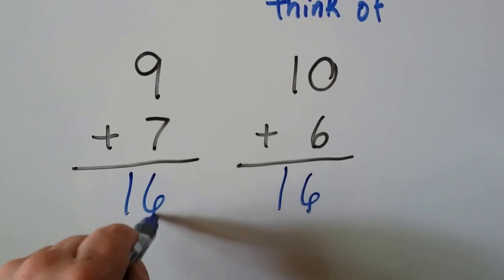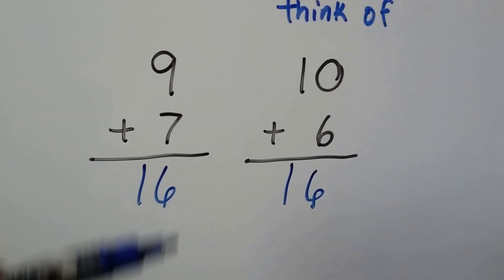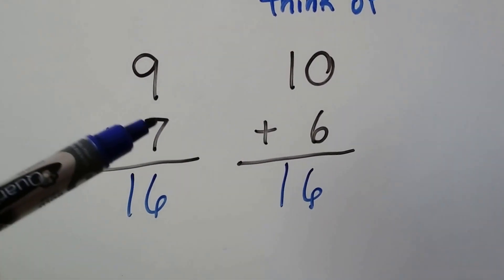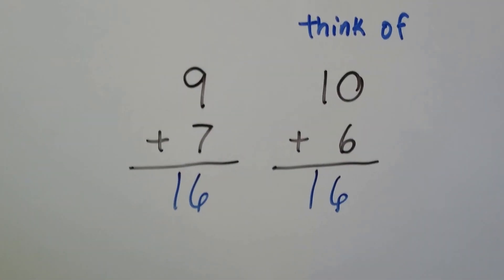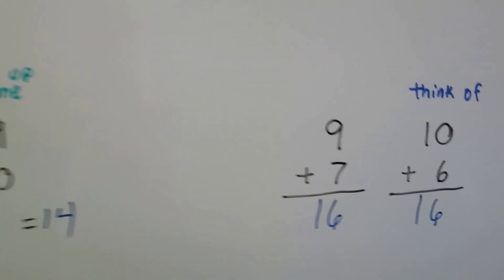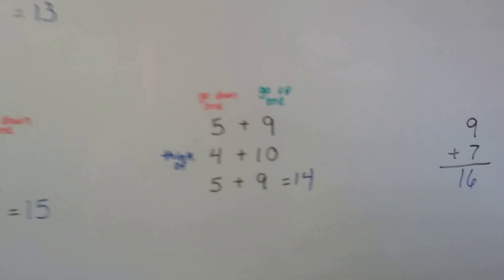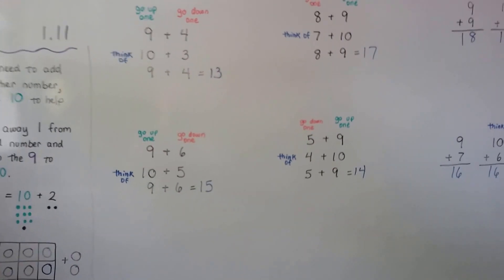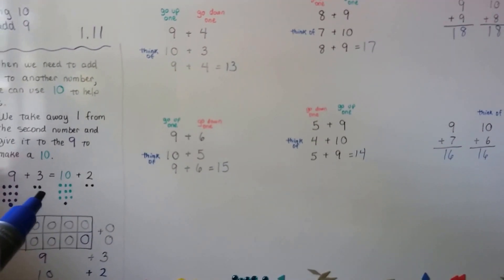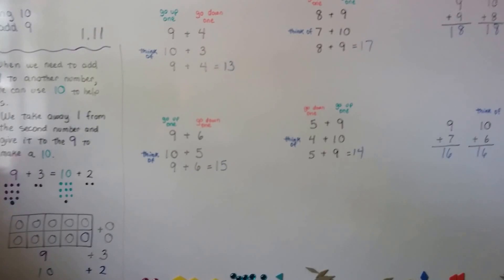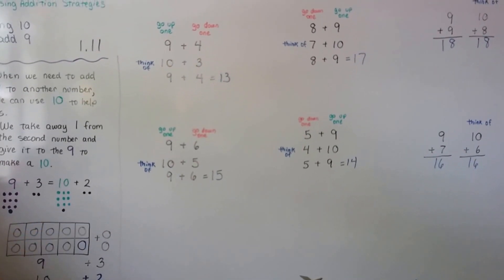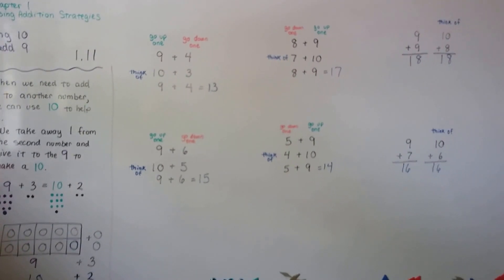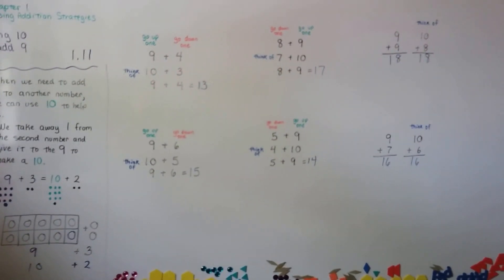9 plus 7 is 16 — just give one of these to the 9 to make a 10, and remember that it goes down by 1. That's how we can use 10 to add 9. When adding 9s, they just share a counter — he just gives one of its counters to the 9 to make a 10, and then we have 10 plus 2. All right, you can try that. I'll see you next video, bye!